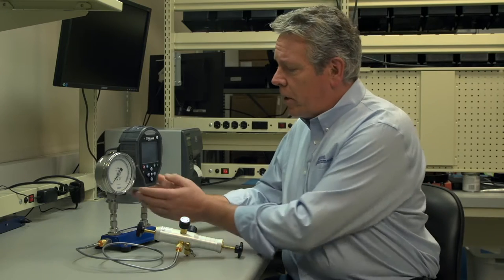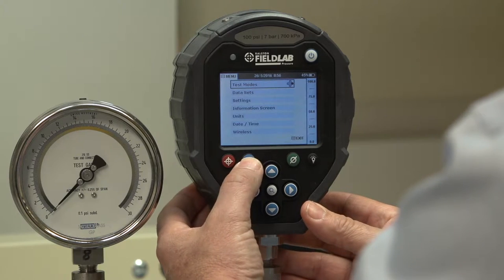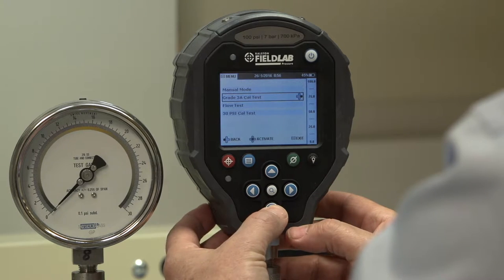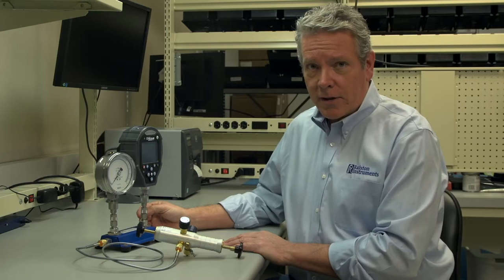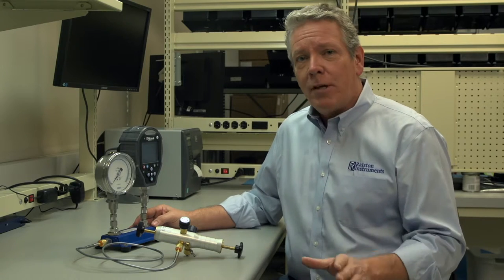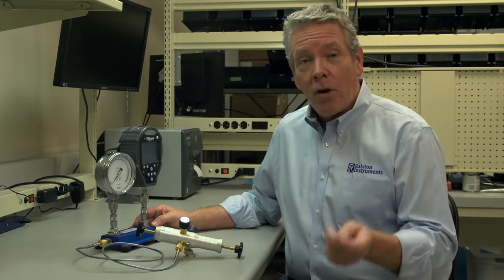Next we'll press the menu button on the Field Lab to choose the test mode that we created for this type of DUT. In this case it's the 30 psi cal test. Keep in mind that any test mode you create can be shared across your field labs or with others.